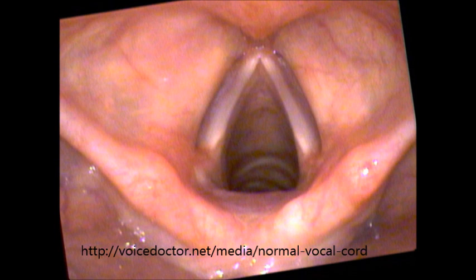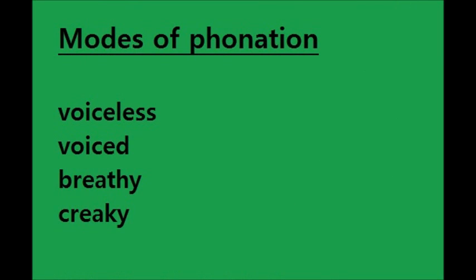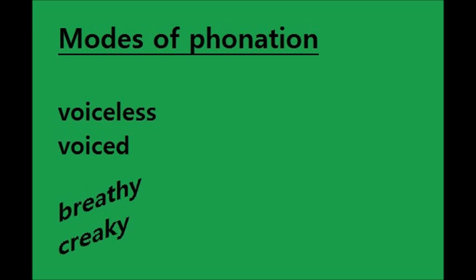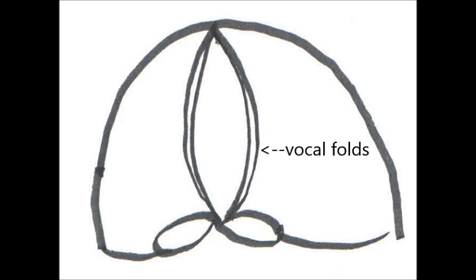The vocal folds play a primary role in producing sounds for language. The different actions of the vocal folds are referred to as modes of phonation. There are four principal modes of phonation in the world's languages, however we will be mostly concerned with the first two here. The first mode of phonation is actually a lack of action on the part of the vocal folds. They are partially open, allowing relatively unrestricted passage of air.